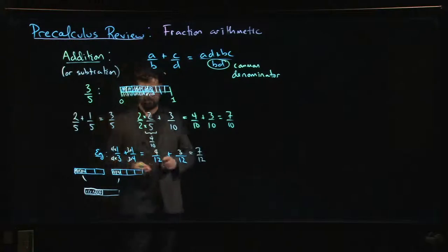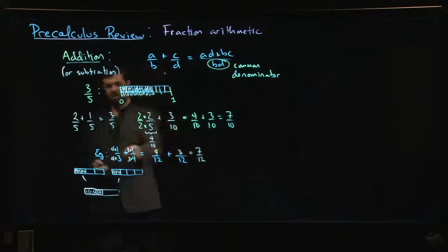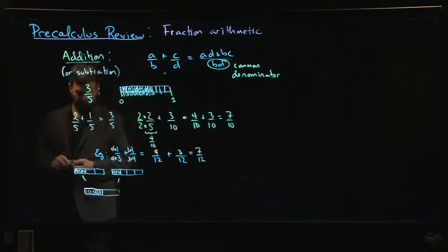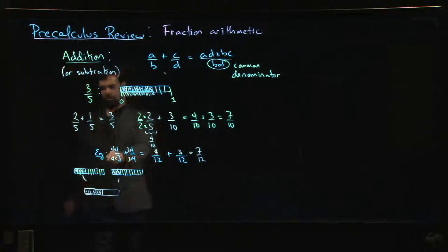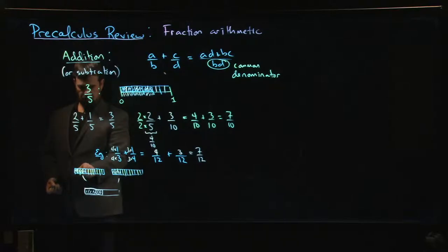What I get is now four-twelfths plus three-twelfths, leaving me with seven-twelfths. If you wanted to use this picture to visualize what you're doing, each of these three pieces you're dividing into four, each of these four pieces you're dividing into three. Now each of these bars has been divided into twelve equal pieces. There are one, two, three, four pieces here, one, two, three pieces here, so you'd have seven pieces out of the twelve in total.